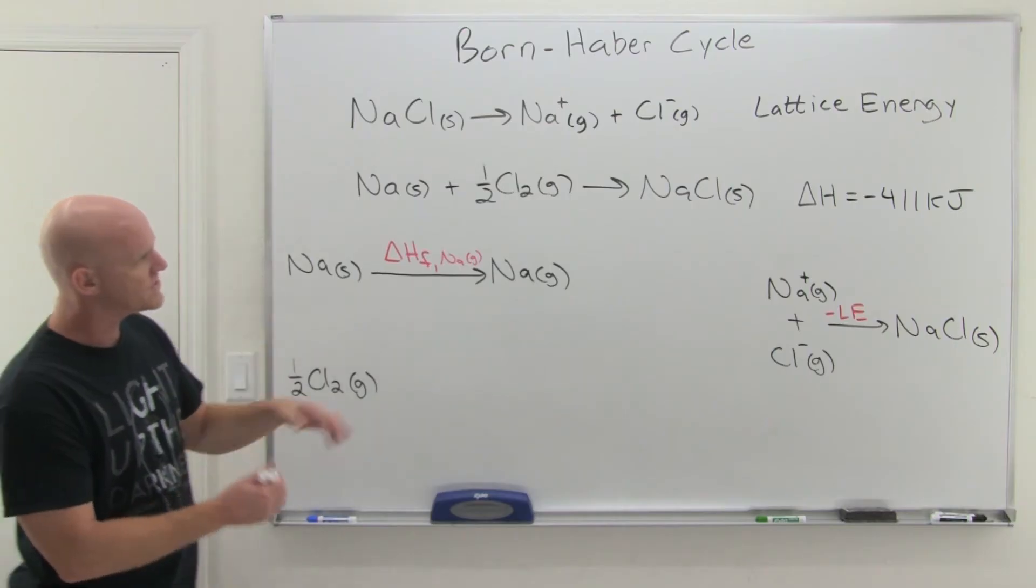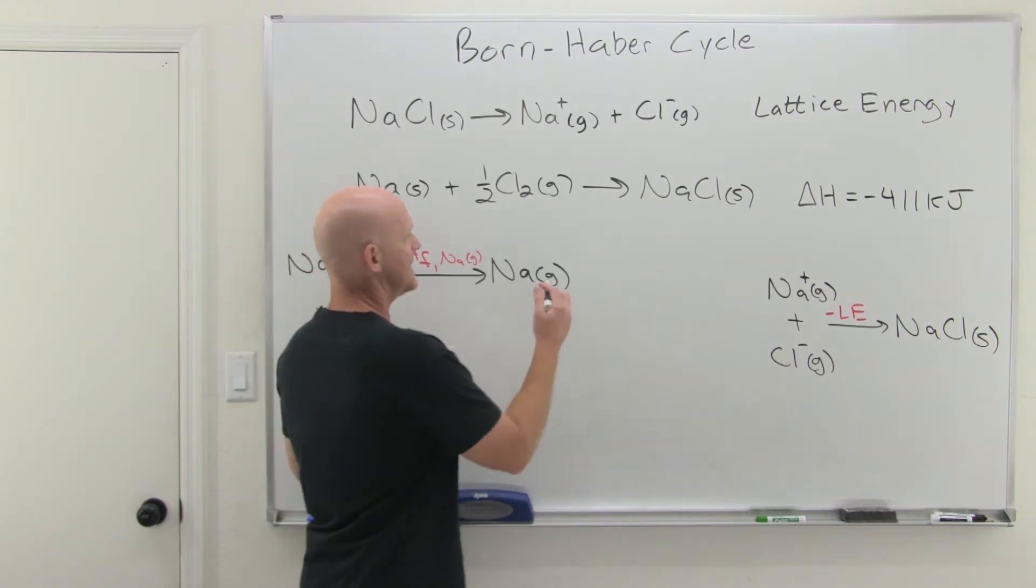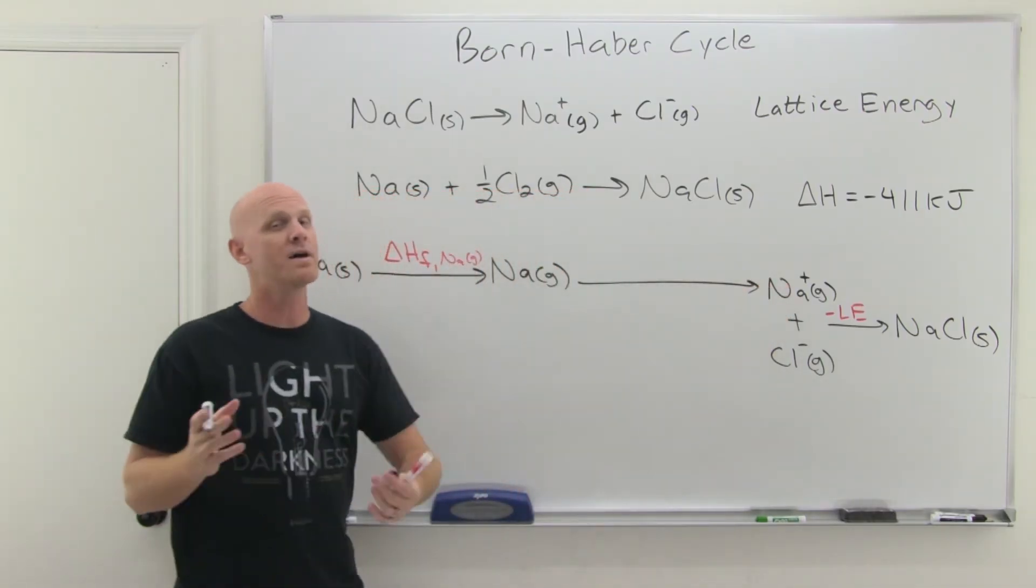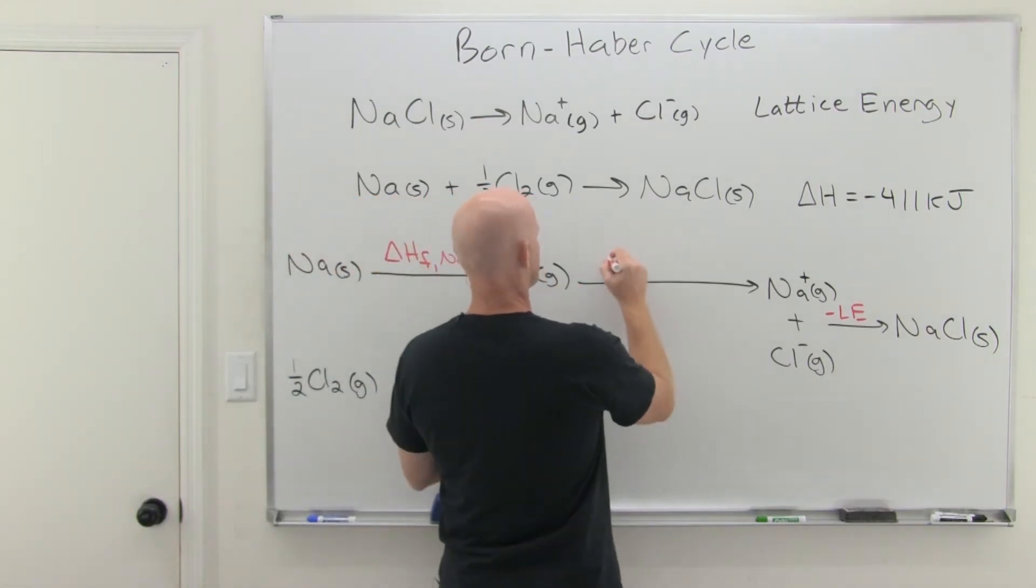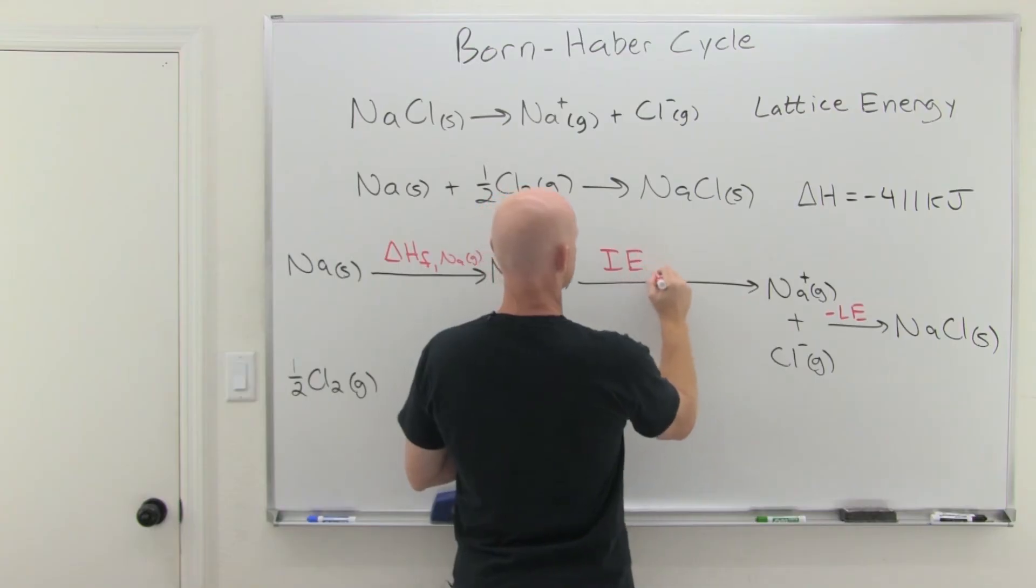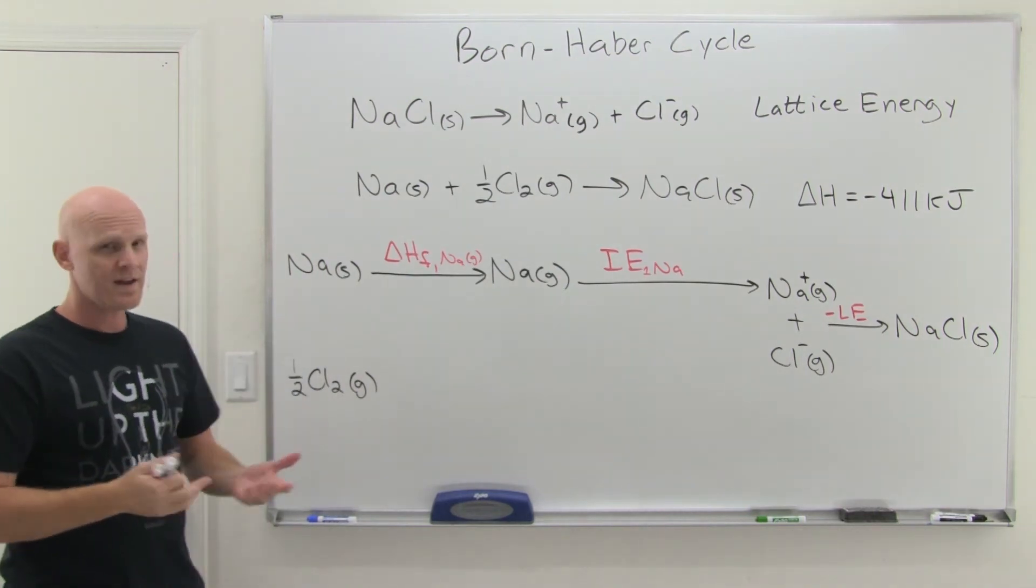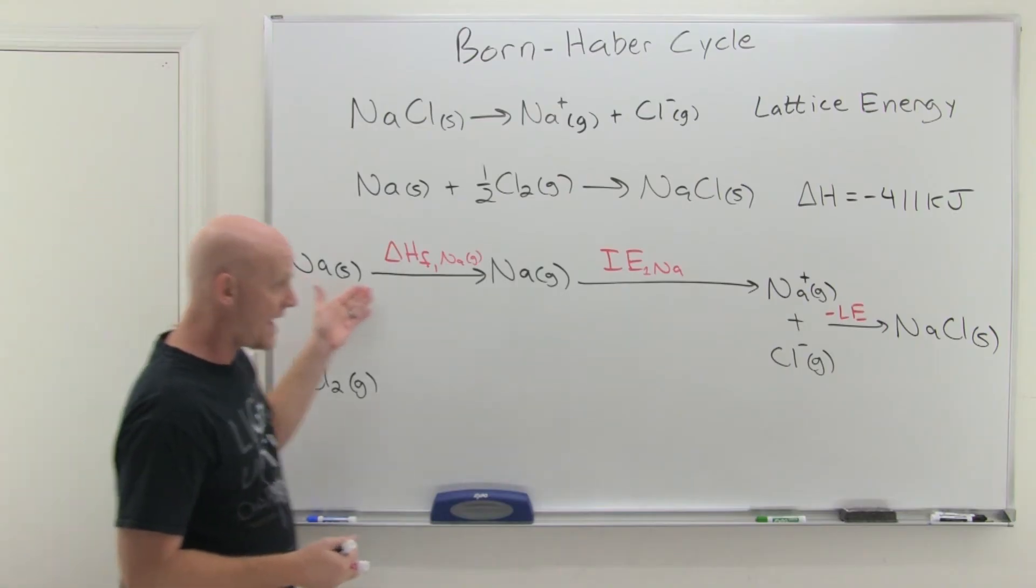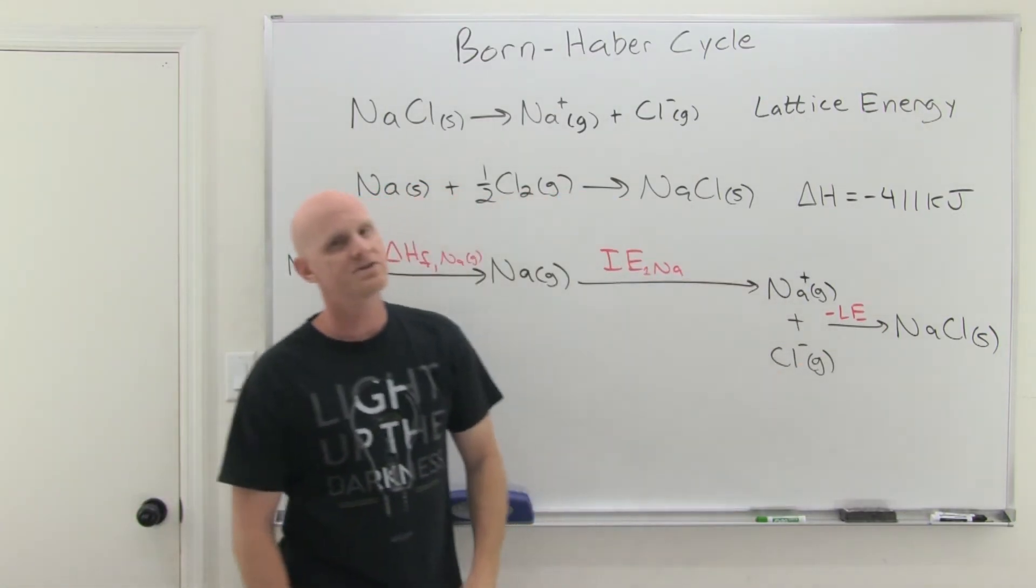And we're going to then turn this sodium, gaseous sodium atom, into a gaseous sodium ion. And to pull that off, we need to lose an electron to form a cation. And you might recall that this is what ionization energy is. And so in this case, that's going to be the ionization energy of sodium. We might call it the first ionization energy of sodium, losing the first electron. And that's been tabulated, that's been measured. We can look that up in a table. And then we're halfway there. We've got the sodium exactly where we need it to complete formation of NaCl.